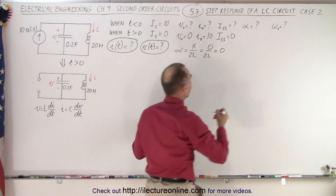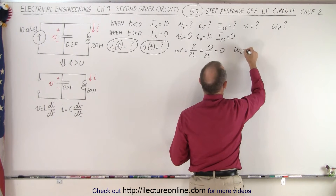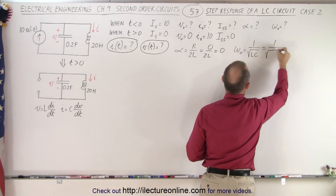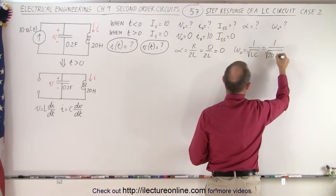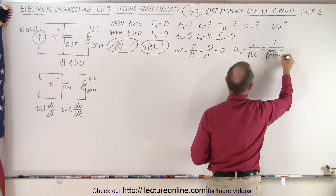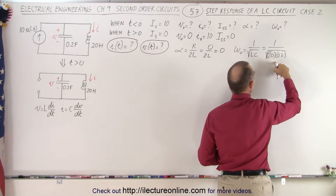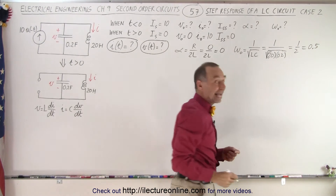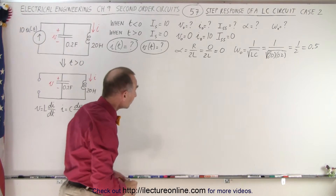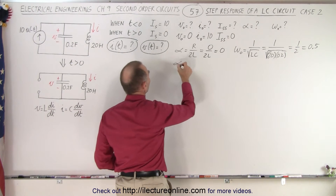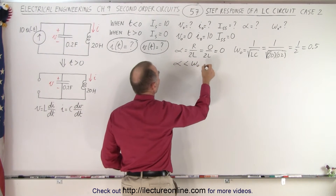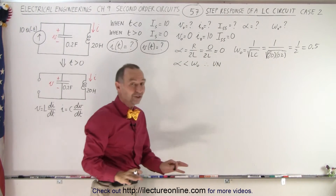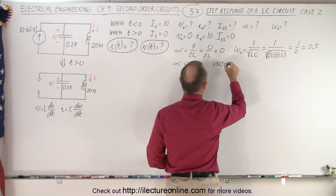What about the natural frequency of the circuit? Omega sub-naught is equal to one over the square root of L times C, which is one over the square root of the inductor — 20 — times the capacitor — 0.2 — which is four. The square root of four is two, giving you one half, or 0.5. That's the natural frequency. So this is definitely where alpha is smaller than omega sub-naught; therefore this is an under-damped case, and of course with no resistance there's no damping factor at all — undamped case.